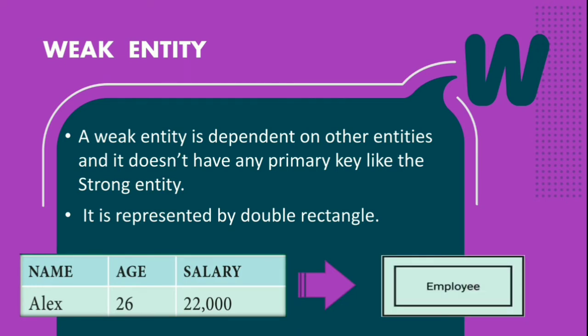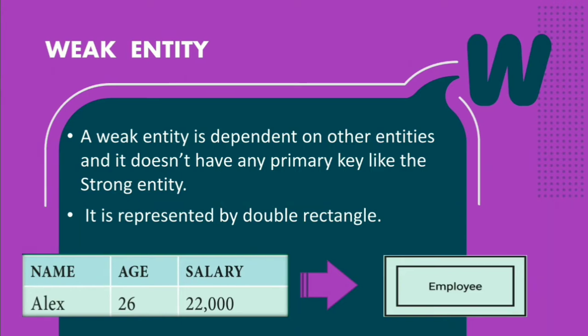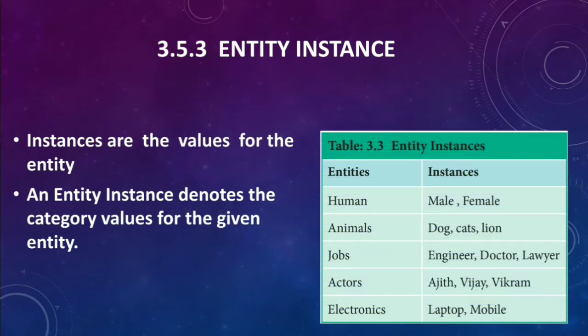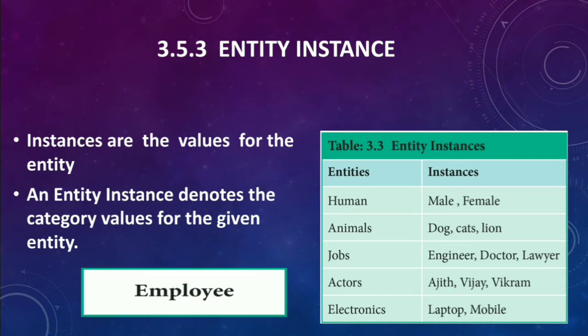The third type is entity instance. Entity means a table; instance means a value for the entity. For example, if the entity is based on Animal, the instance can be Dog, Cat, or Lion. In our previous example, the rectangle box holds the value 'Employee' because the table was based on employee details — so 'Employee' is the entity instance.